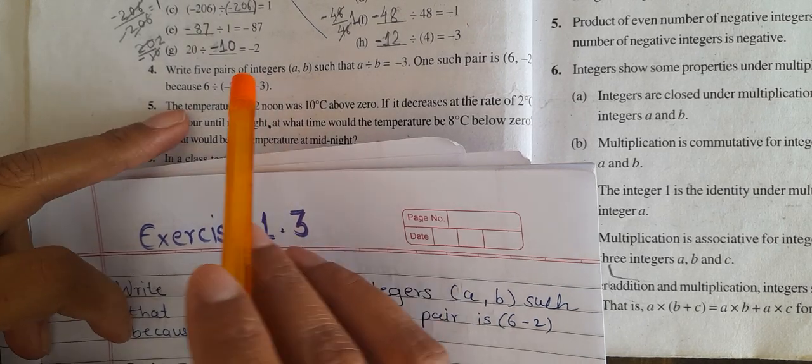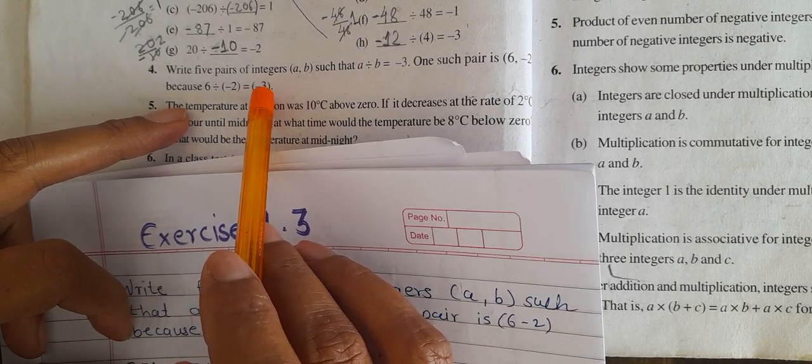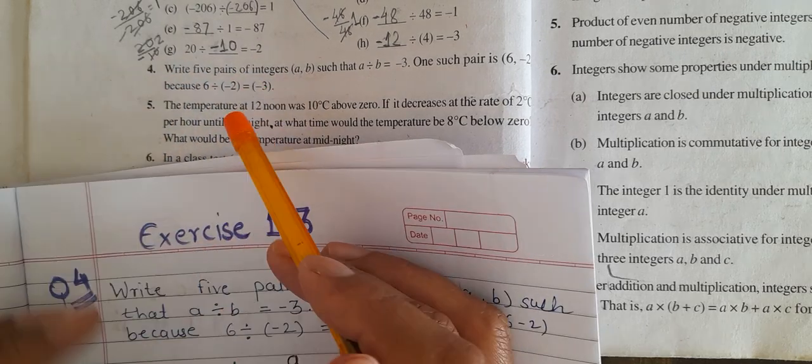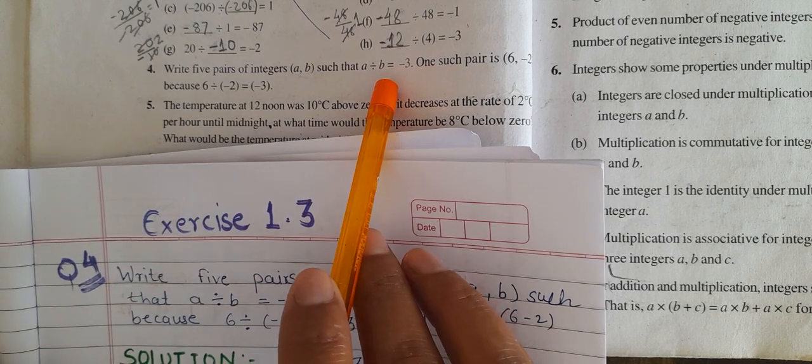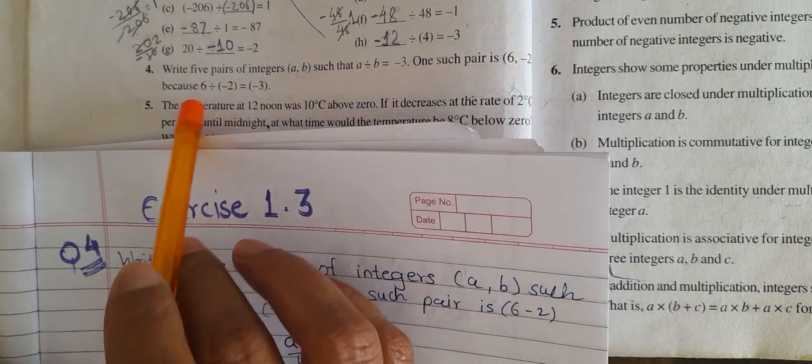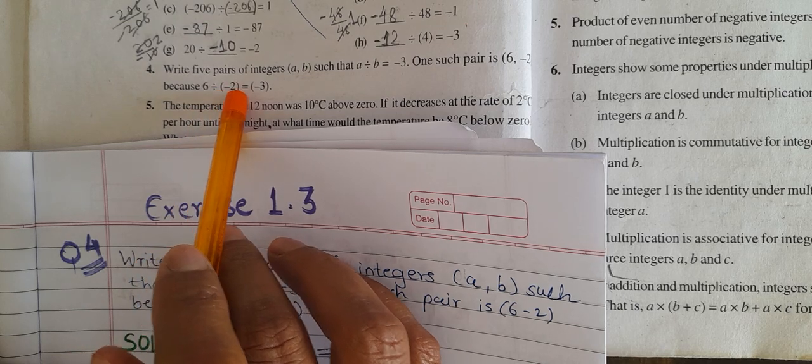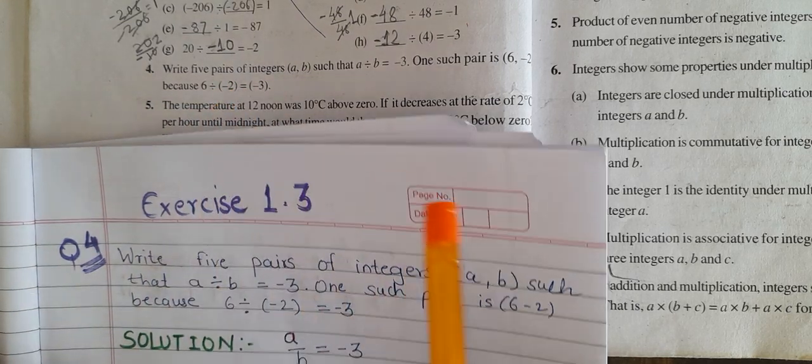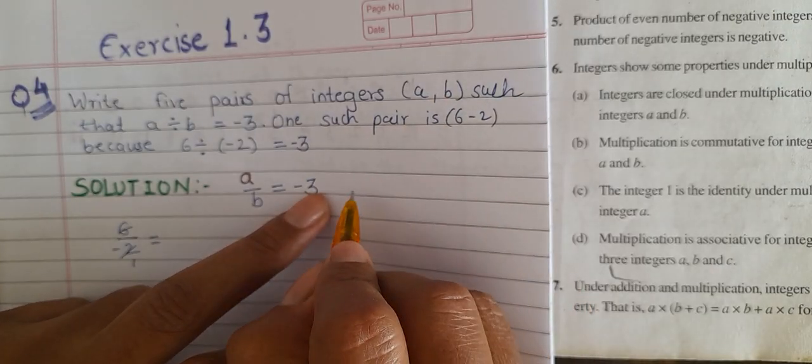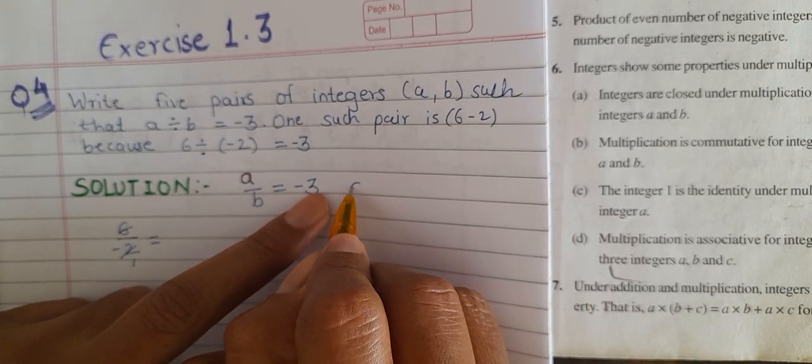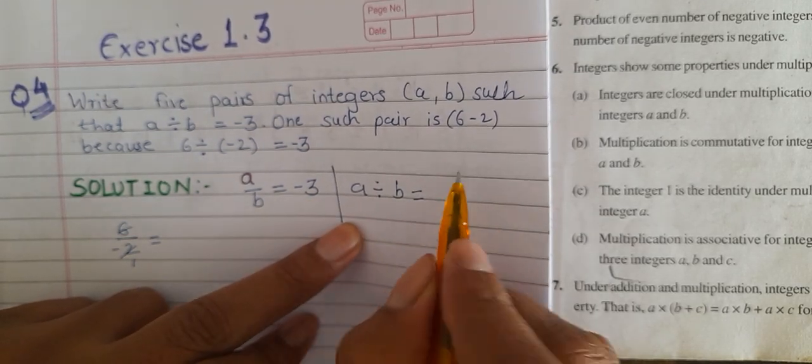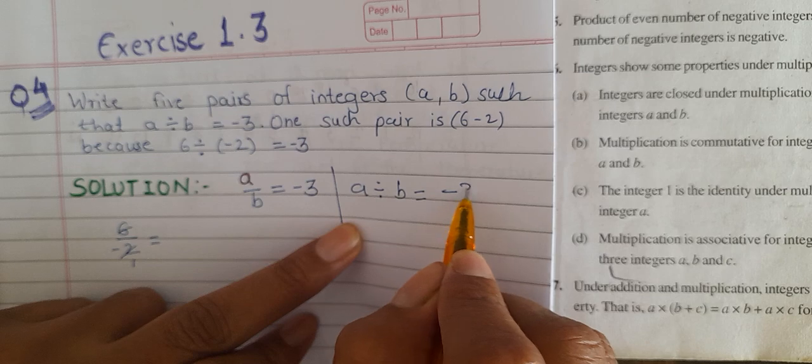So, we will find 5 pairs of integers where A divided by B is equal to minus 3. And one such pair is 6 divided by minus 2 is equal to minus 3.